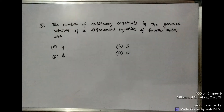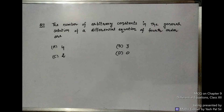Question number 11: The number of arbitrary constants in the general solution of a differential equation of fourth order. If the differential equation is of order 4, then find the number of arbitrary constants in the general solution. Option A: 4, Option B: 3, Option C: 2, Option D: no arbitrary constant.